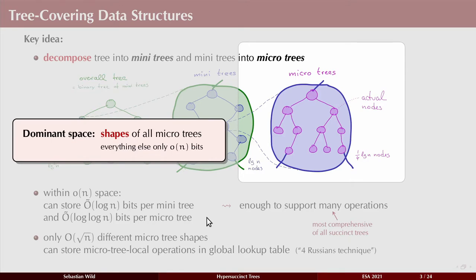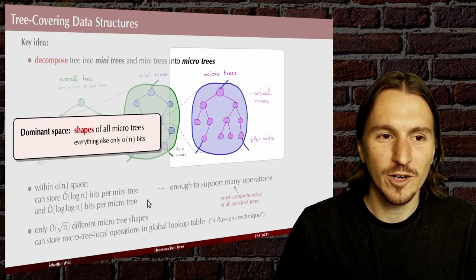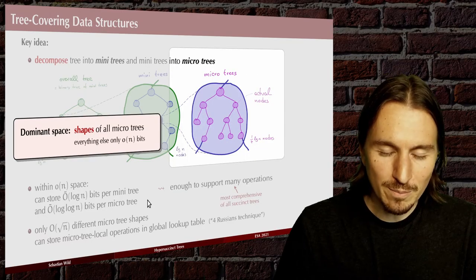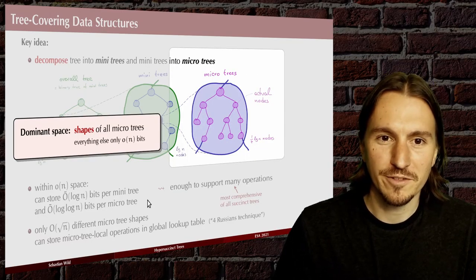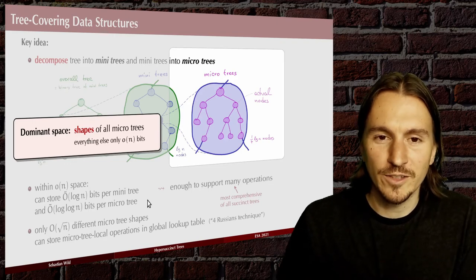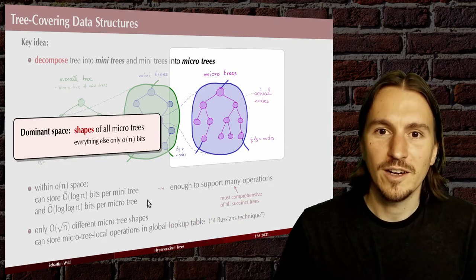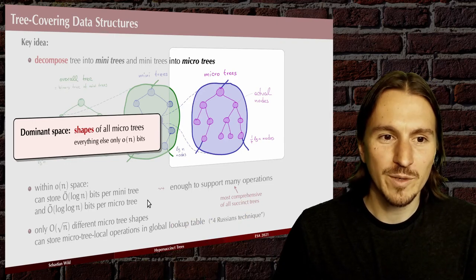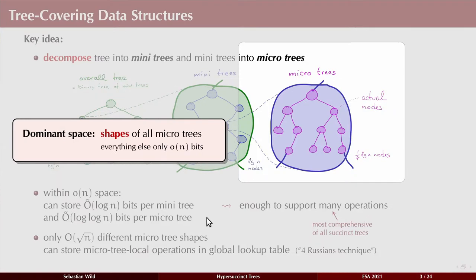The interesting observation is that the dominant space from storing all these different pieces comes from remembering the shapes of all the micro trees — how each little micro tree looks. I have to write that down somehow, and that gives the 2n bits; everything else is a lower-order term.